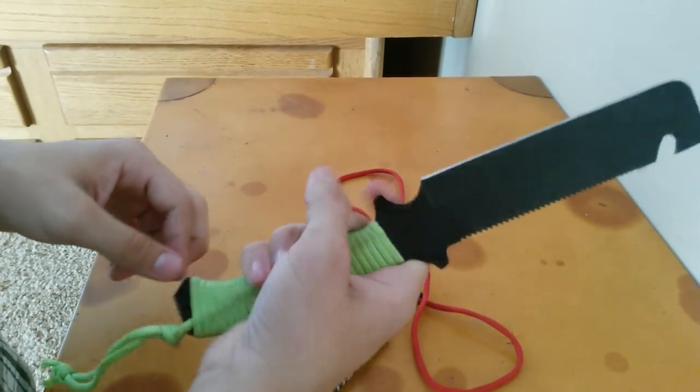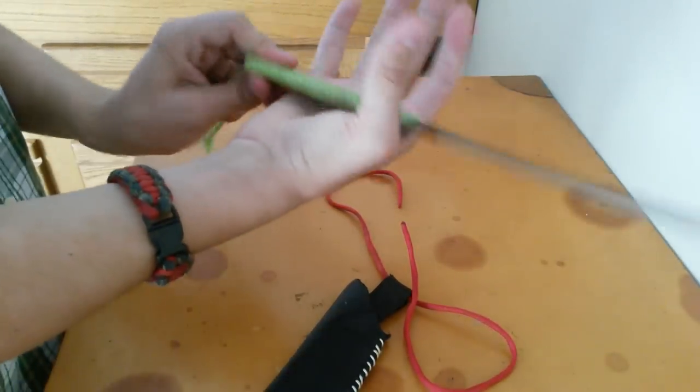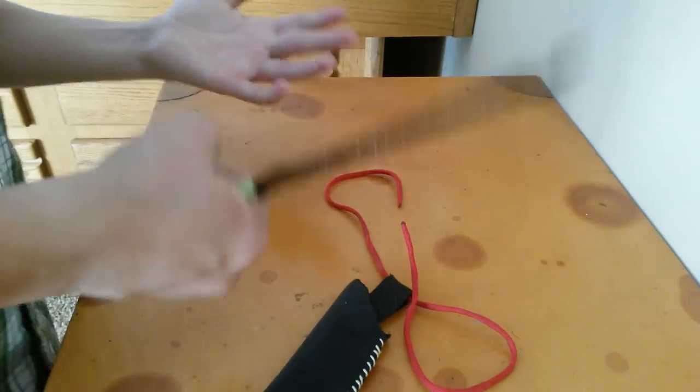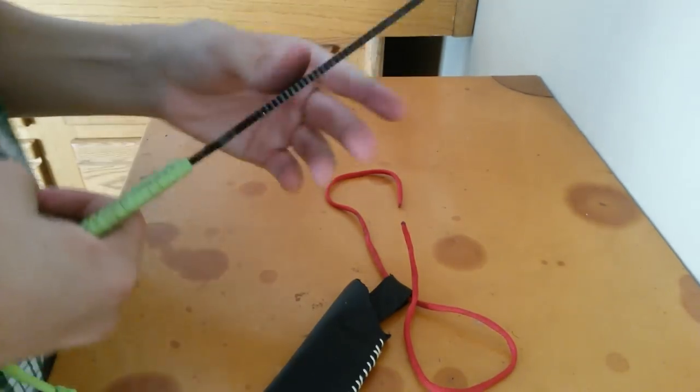And just a normal Scandi grind with a really great choil. It was already like this. For some reason they lost the original sheath for this blade.